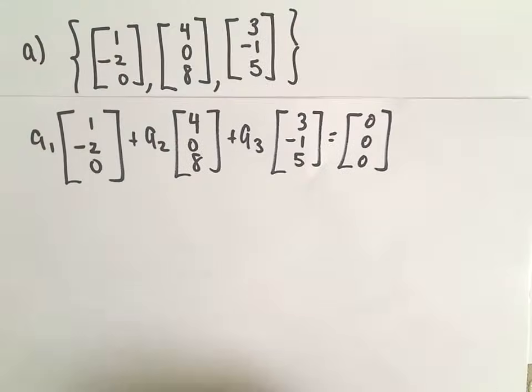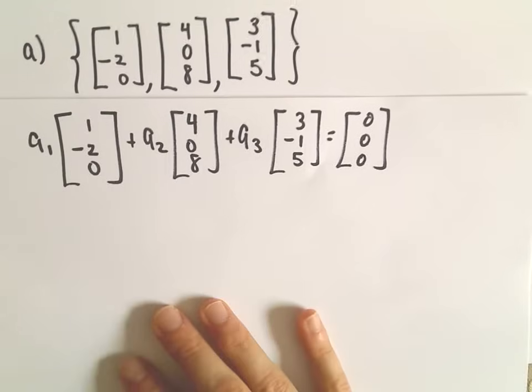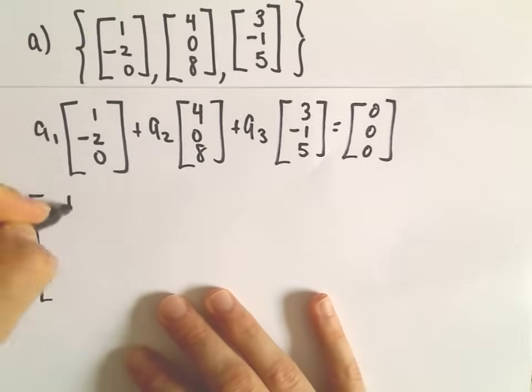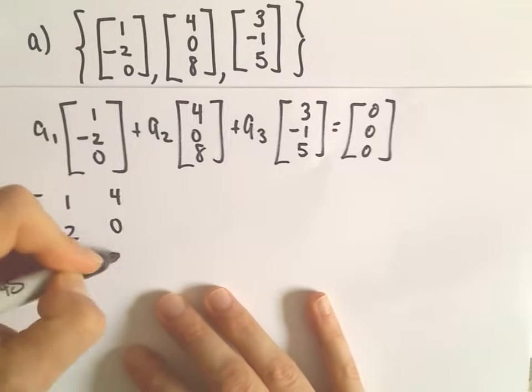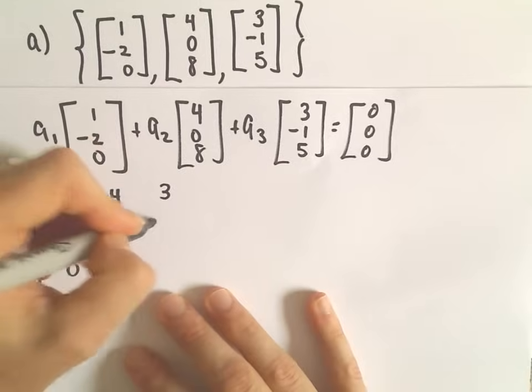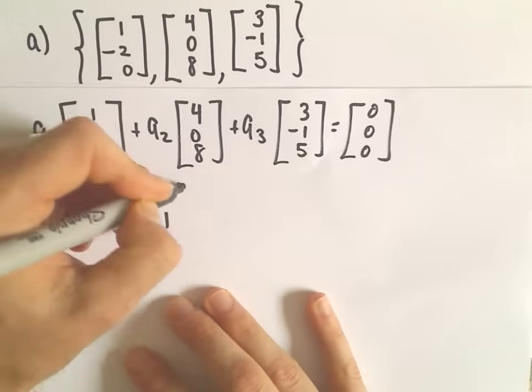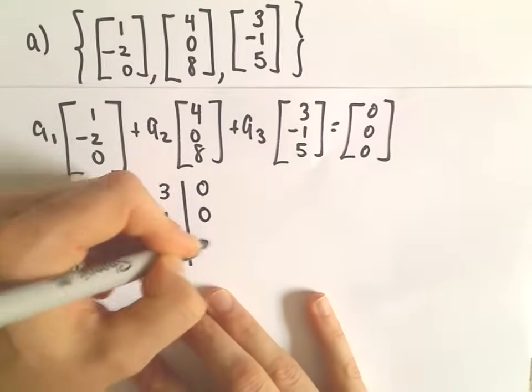So what I'm going to do is just write this as a matrix and then do some row reduction. So we have 1, negative 2, 0, 4, 0, 8, 3, negative 1, 5, and then 0, 0, 0.